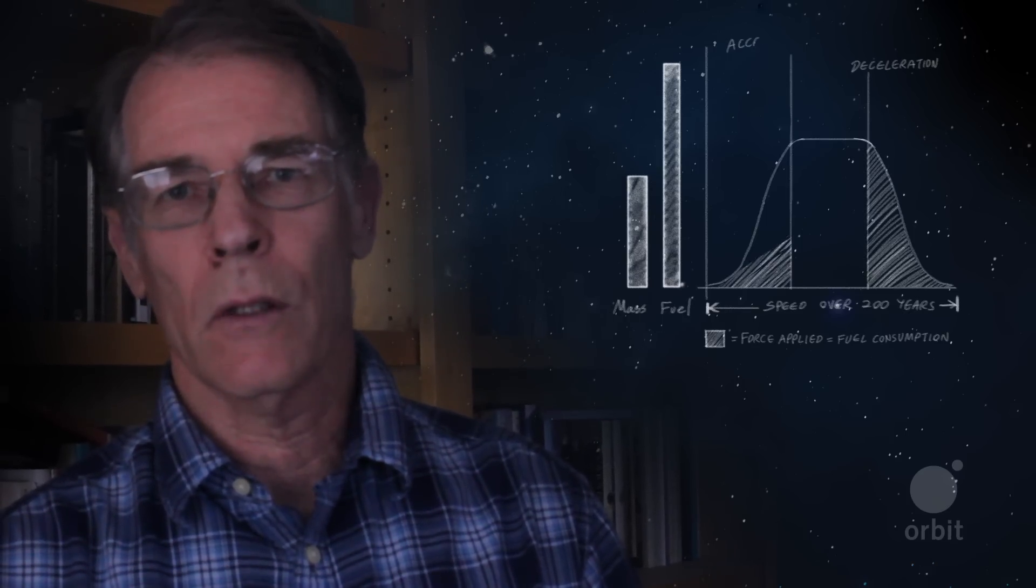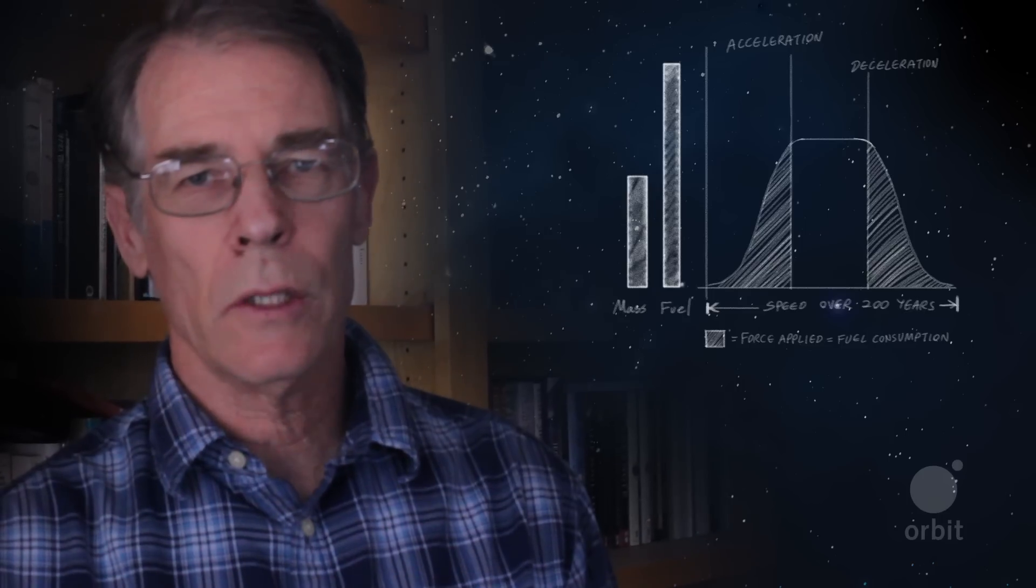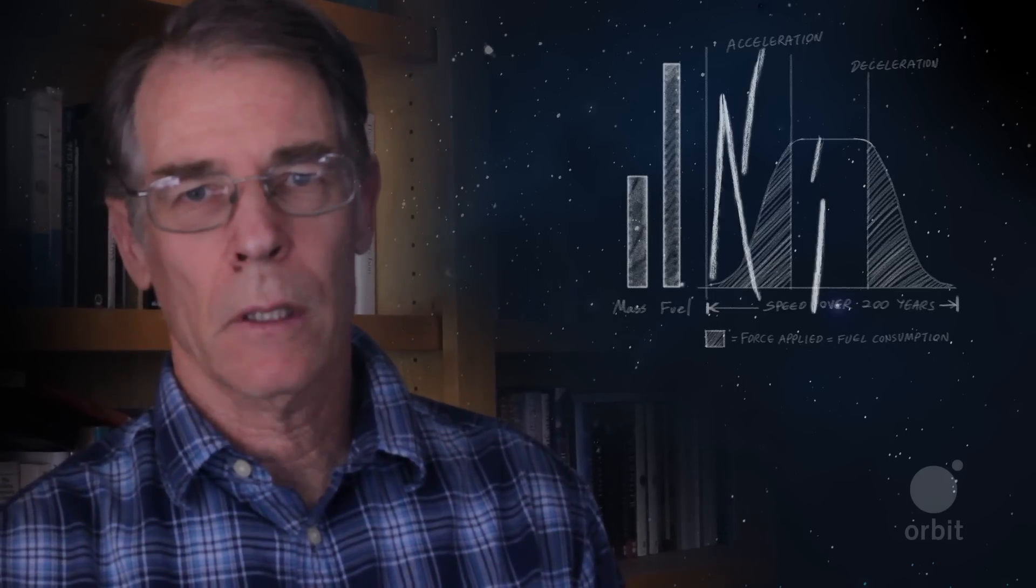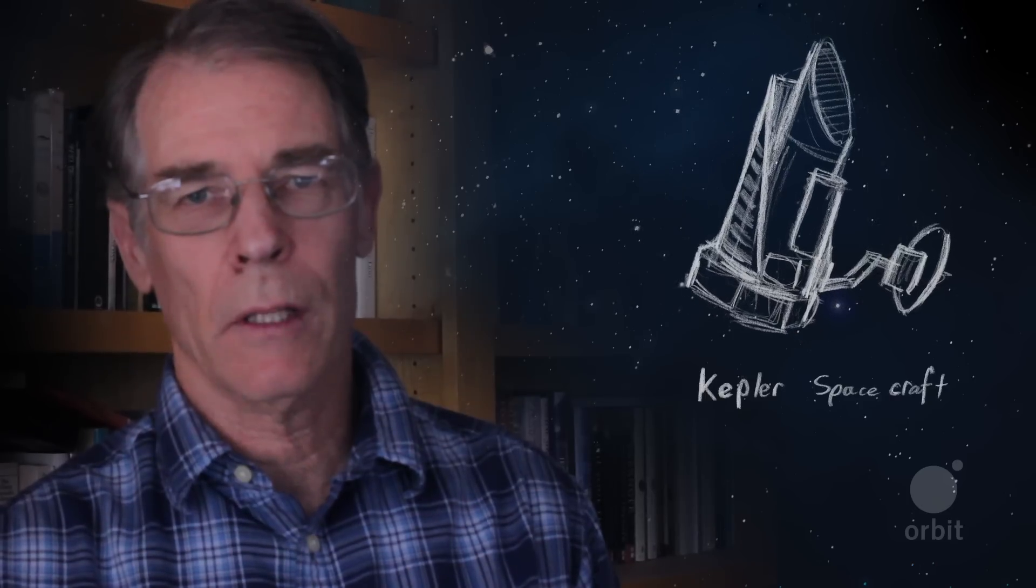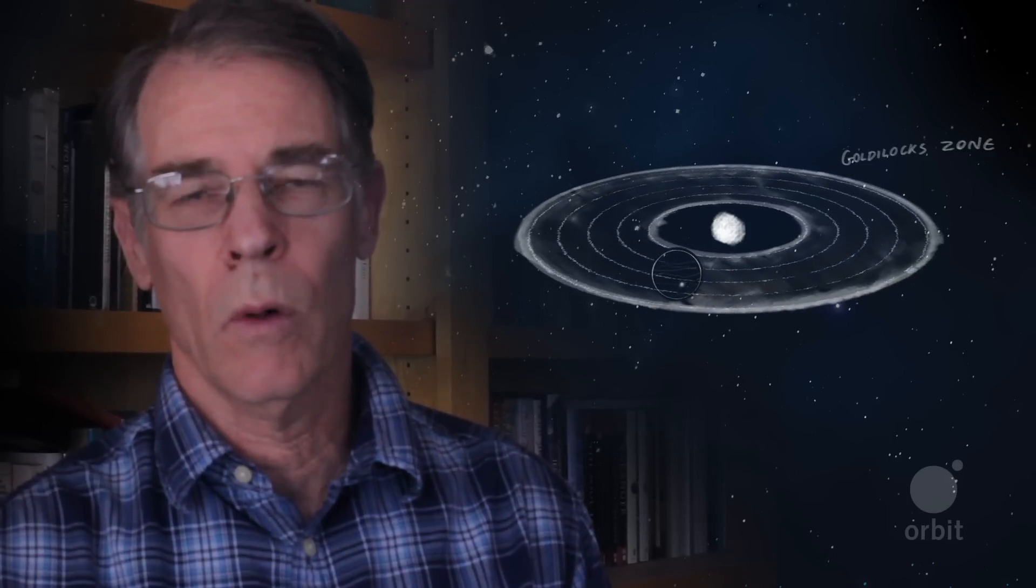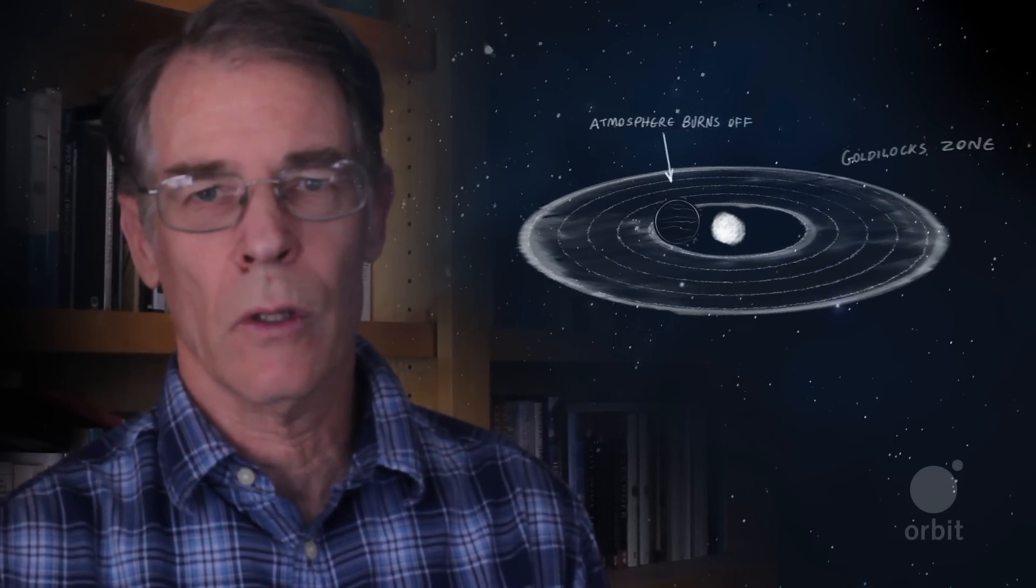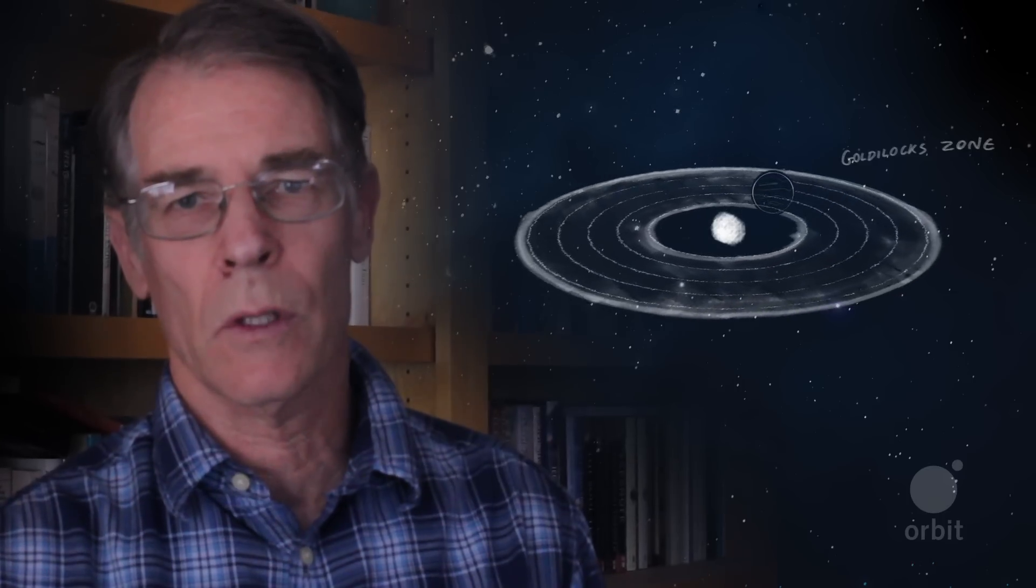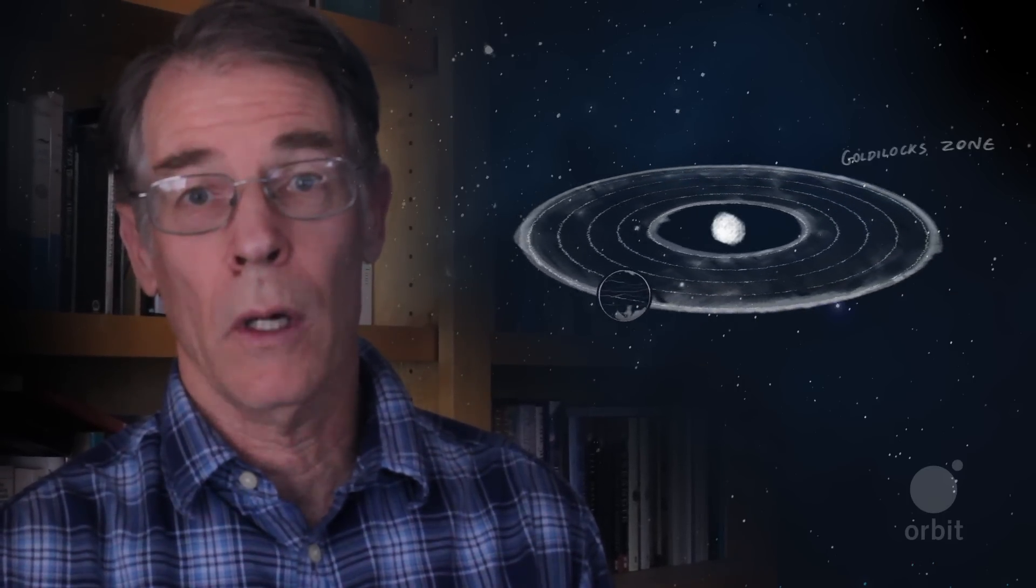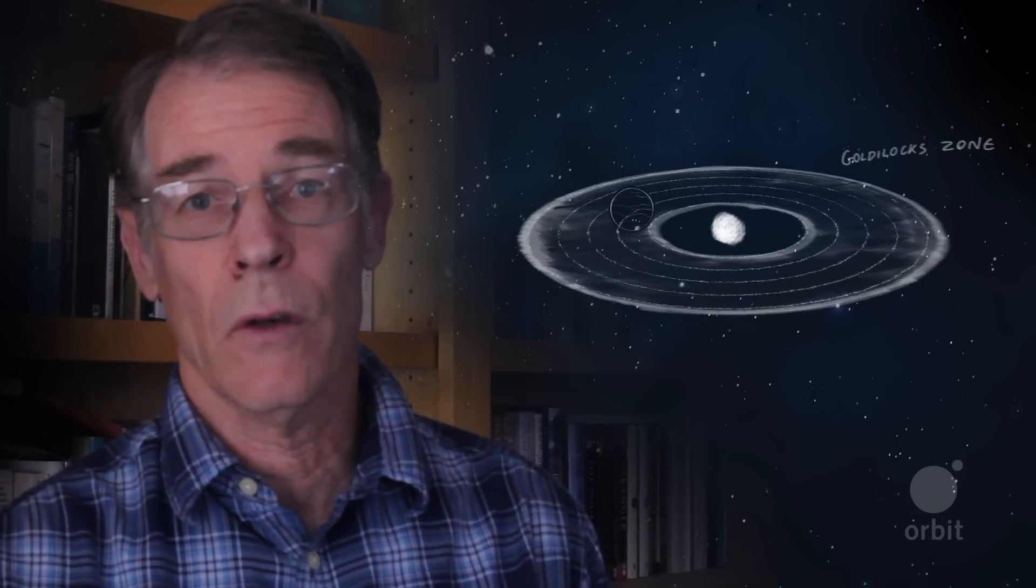Now there's no question that there are a lot of Earth-like planets out there in this galaxy. The Kepler satellite and everything that we know about planetary science makes that pretty clear. Water is super common in the universe. Rocky planets also, a combination of the two, and a planet that's in the so-called Goldilocks zone, where it's not so close to the sun that it burns up, not so far from its sun that it freezes. The Goldilocks zone is pretty broad, and life is very adaptable.